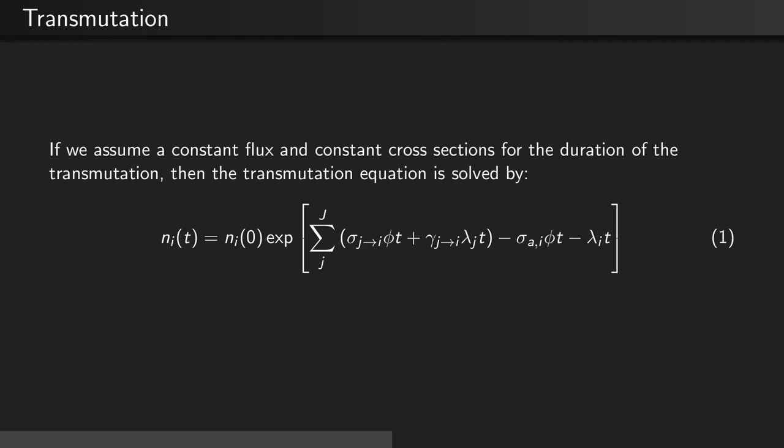If we assume a constant flux and constant cross-sections for the duration of the transmutation, then the transmutation equation is solved by ni(t) = ni(0) exp of the sum over all j nuclides of (σj→i φt + γj→i λj t) subtracted by the loss terms σa,i φt - λi t.